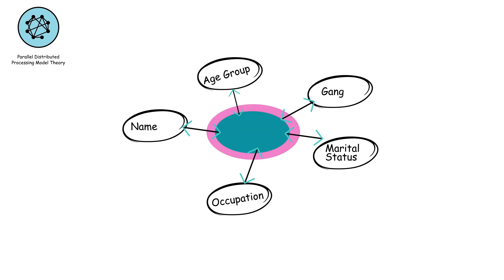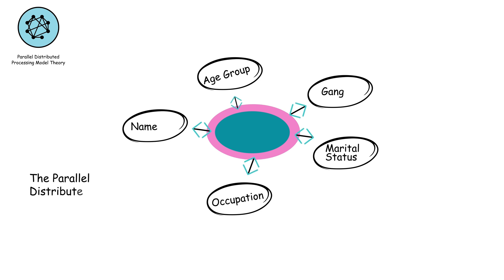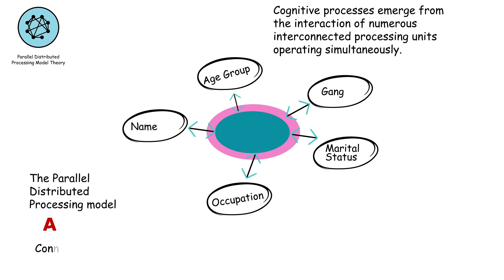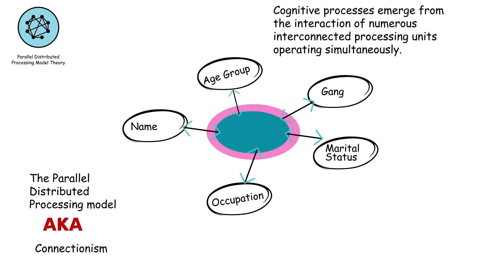The parallel distributed processing model theory, also known as connectionism, proposes that cognitive processes emerge from the interaction of numerous interconnected processing units operating simultaneously. It suggests that knowledge is distributed across a network of nodes, with information processing occurring in parallel rather than sequentially.